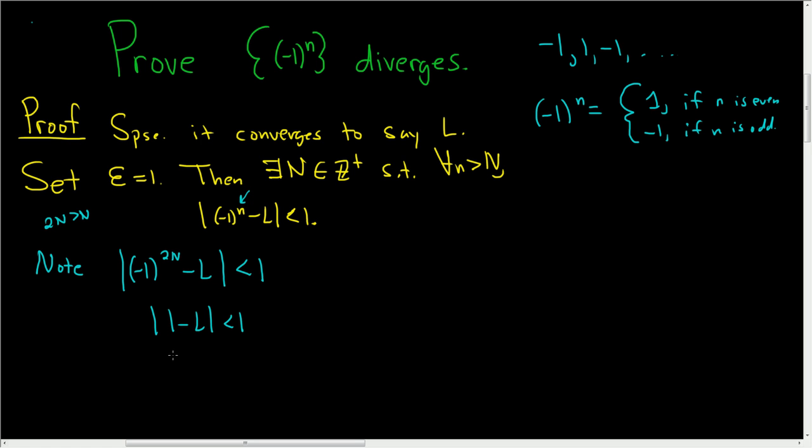And what does this mean? This means that 1 - L is less than 1 and greater than negative 1. And if we subtract 1 from every side, we end up with -2 < -L < 0. Okay, so we've used the fact that the sequence is equal to 1 if n is even. So that part is done.